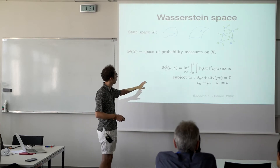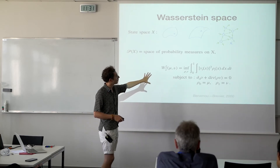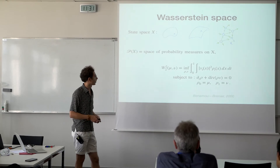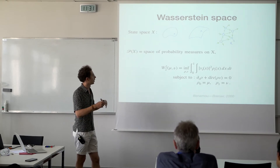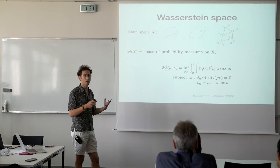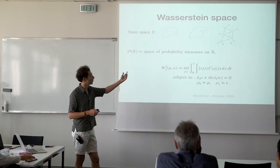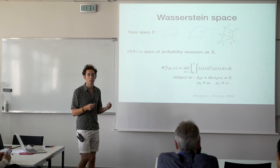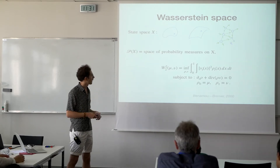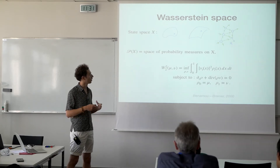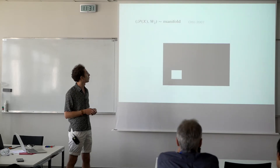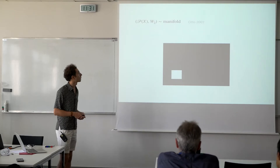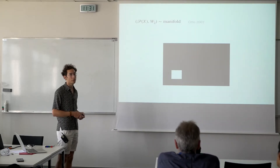This is the Benamou-Brenier formula that we've seen in the previous talk. So this is a distance on the probability measures, and this distance has a geodesic action minimization problem — we think of it as defining geodesics. Therefore our probability space can be seen as a manifold: the Wasserstein space.